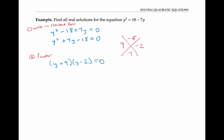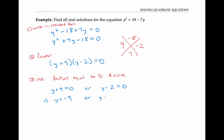This is really handy, because that means either y plus nine equals zero, or y minus two equals zero. Setting each factor equal to zero gives y equals negative nine, or y equals two. It's a good idea to check those answers by plugging them into the original equation: negative nine squared equals 18 minus seven times negative nine, and you can verify it works. Similarly, two squared equals 18 minus seven times two.